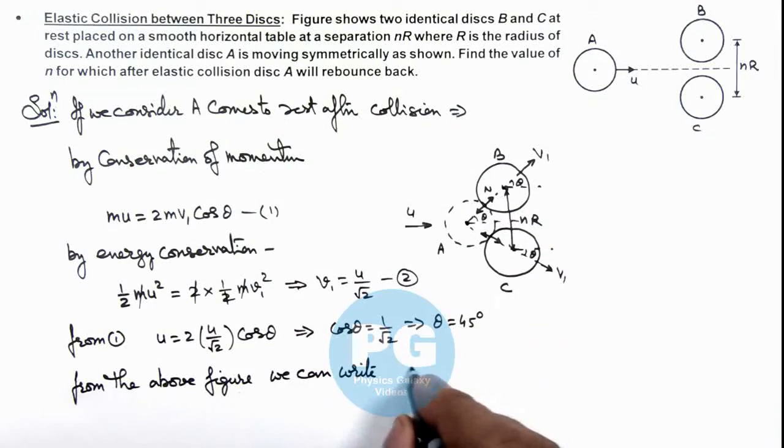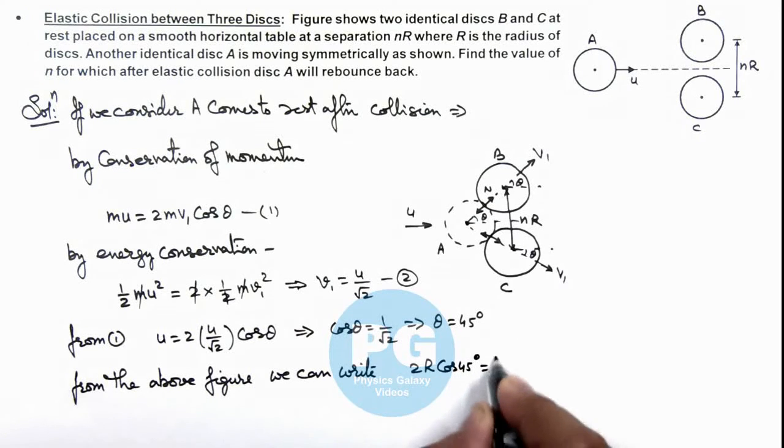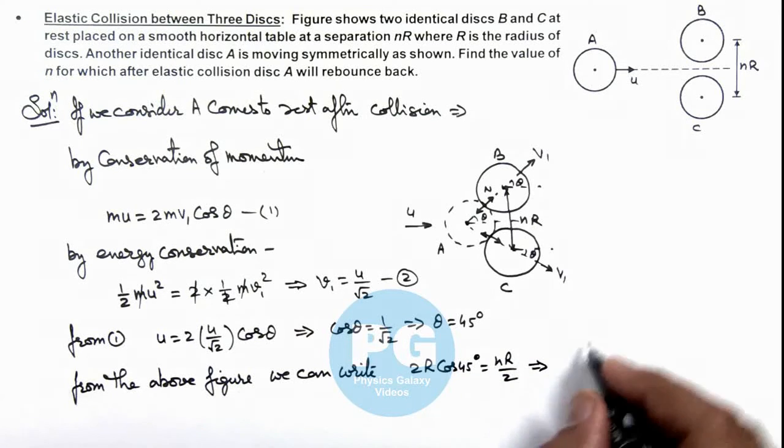In this situation, this distance is 2R. So this 2R is equal to, cos 45 degrees must be equal to 1 by root 2, which equals nR by 2. This implies we are getting the value of n is equal to 2 root 2.